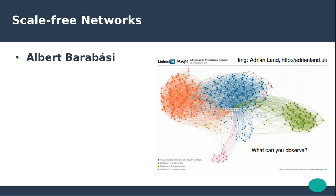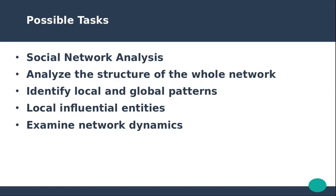At present, complex networks have two types: random networks and scale-free networks. Networks are analyzed to perform different kinds of tasks, which can be separated into two types: static analysis and dynamic analysis.